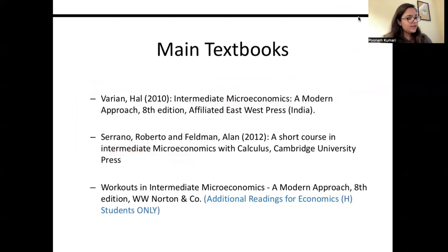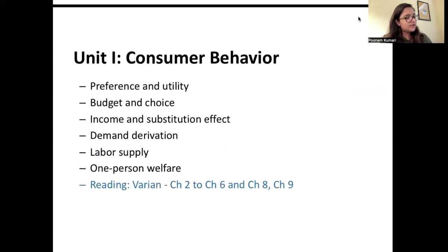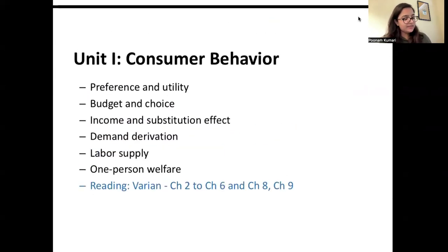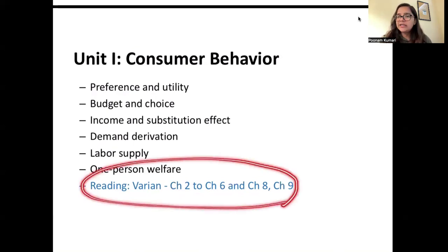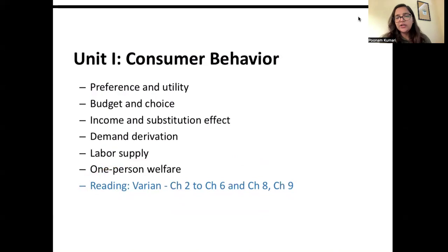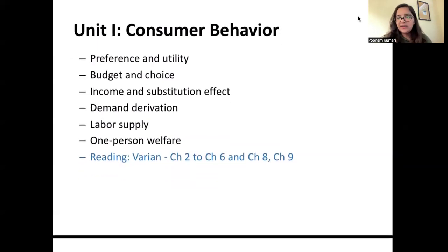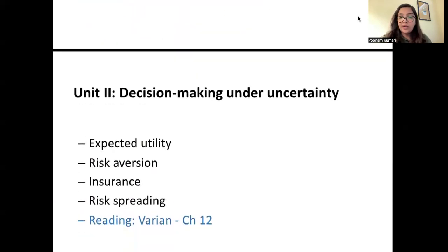For the first unit, consumer theory, we will refer chapters 2 through 6 from Varian, skip chapter 7, and then do chapters 8 and 9. Last year, the Roberto SF book was referred for the honor students for this section, but this time it has switched back to Varian, as was done before. So these are the readings for unit one, which is consumer theory.